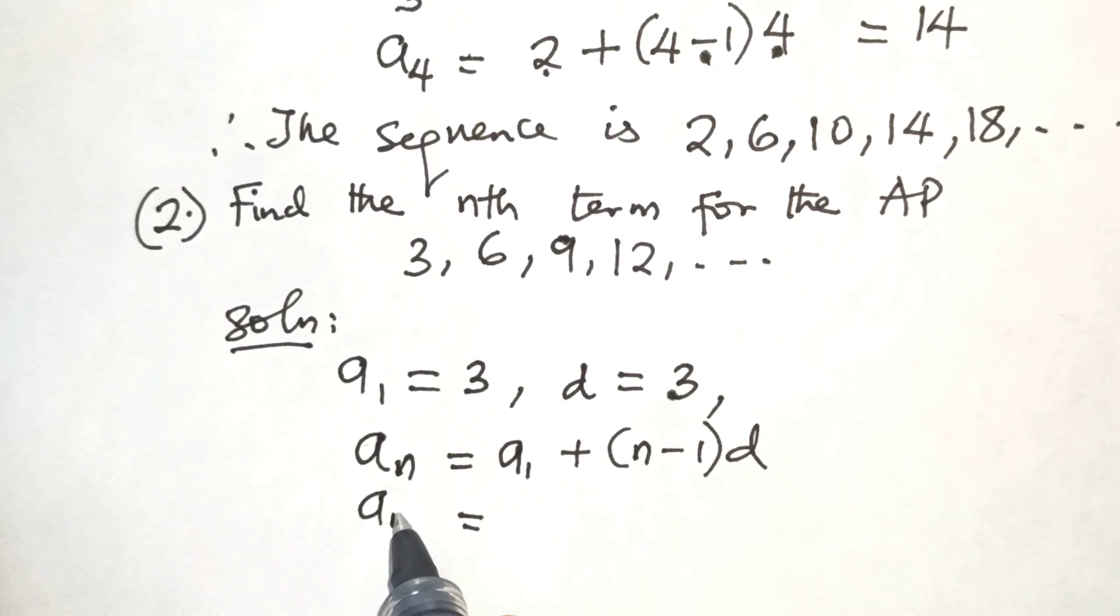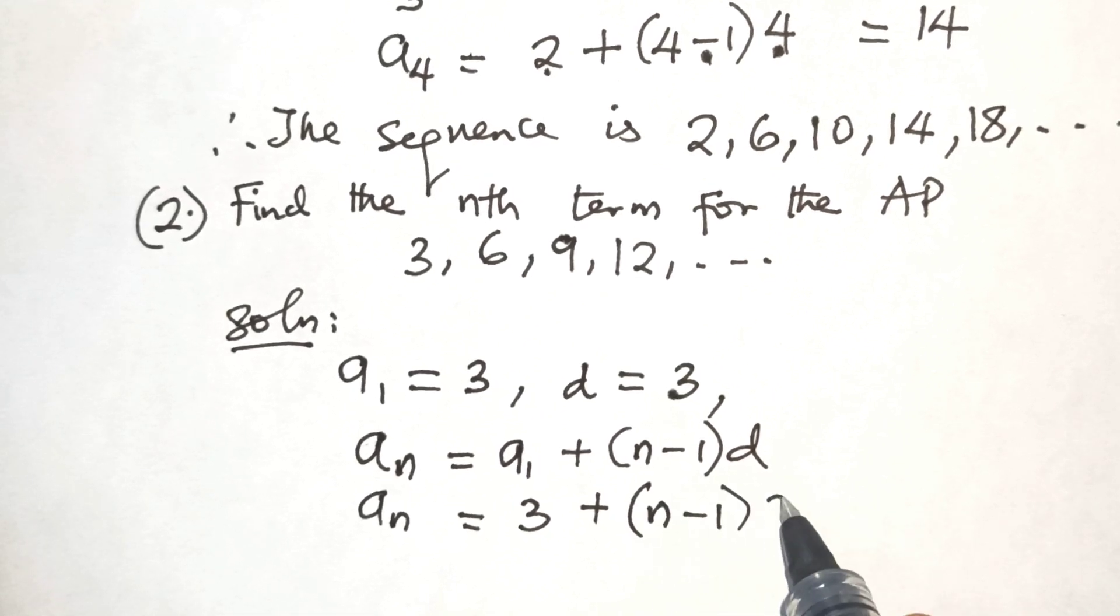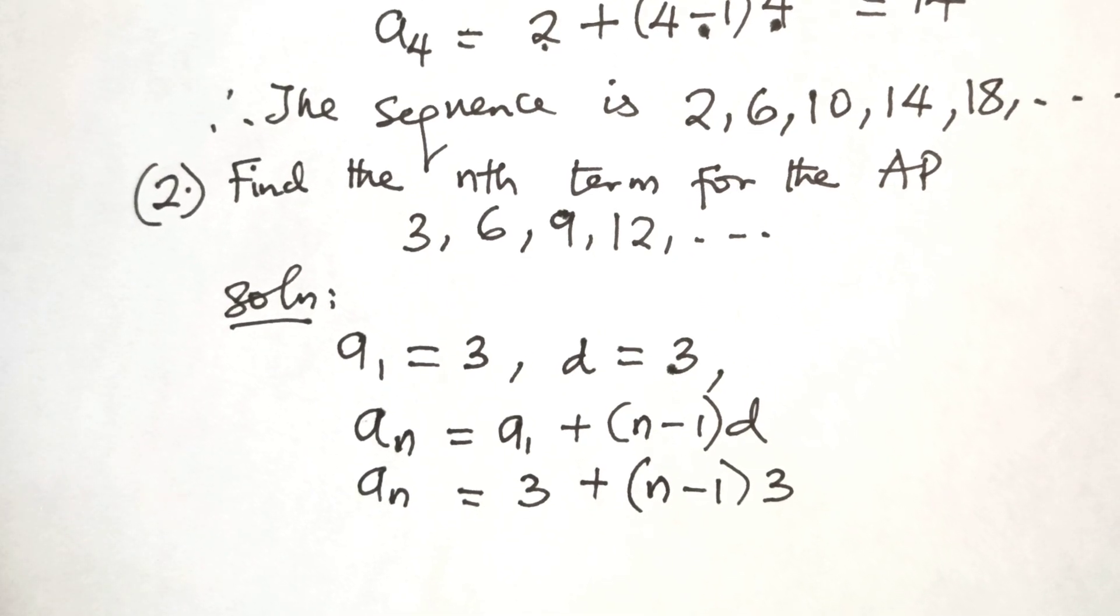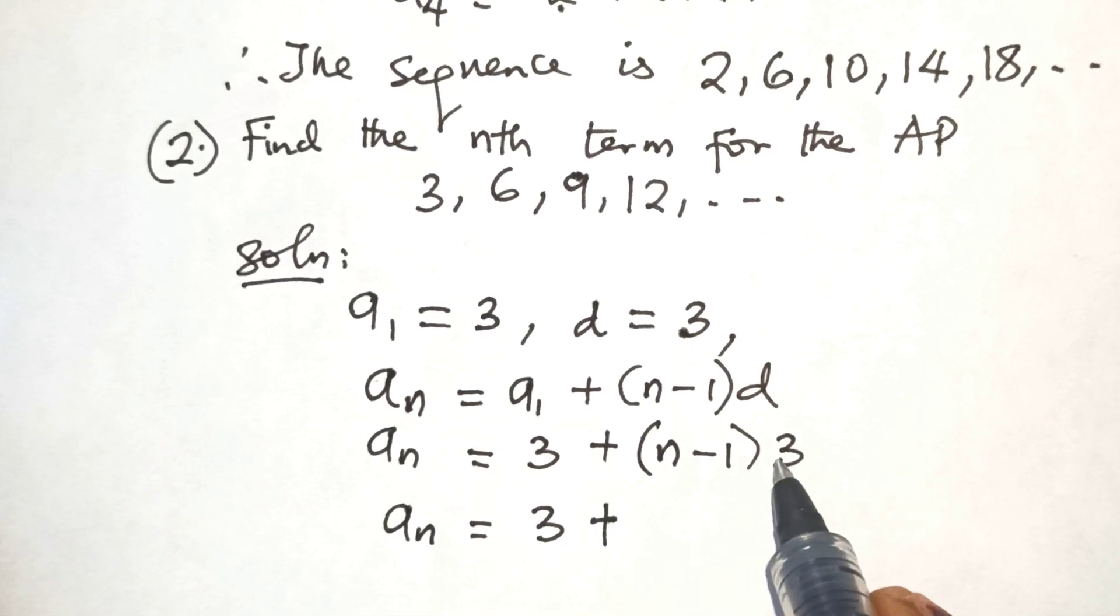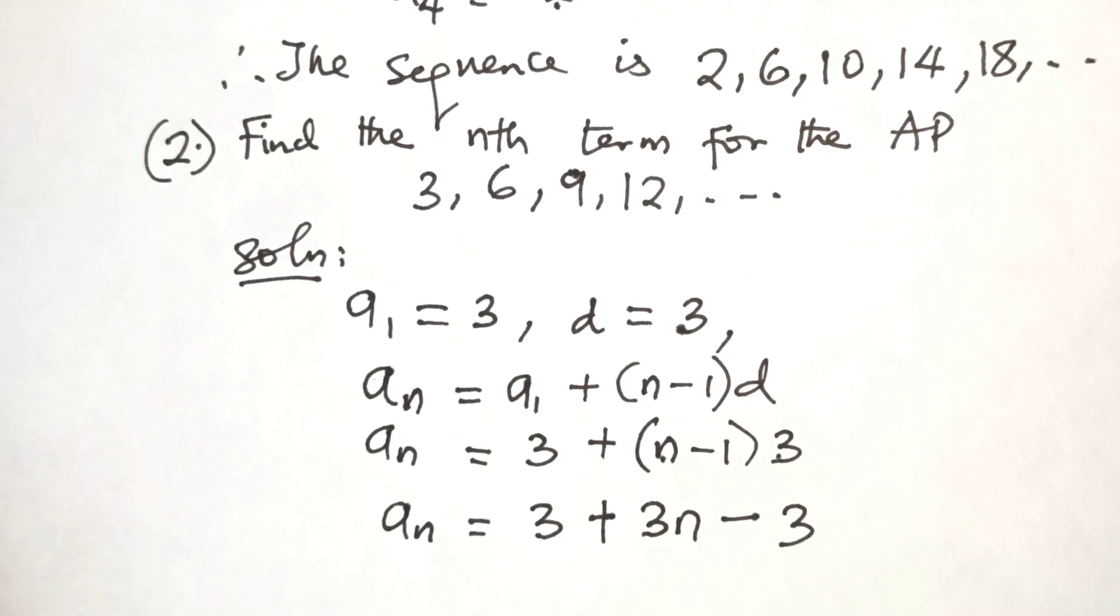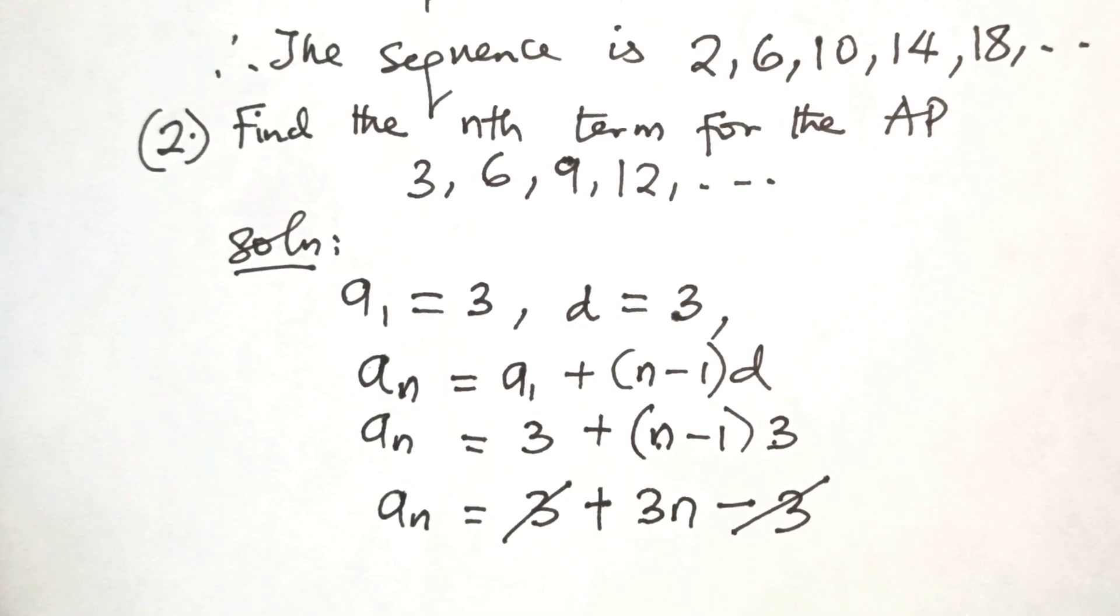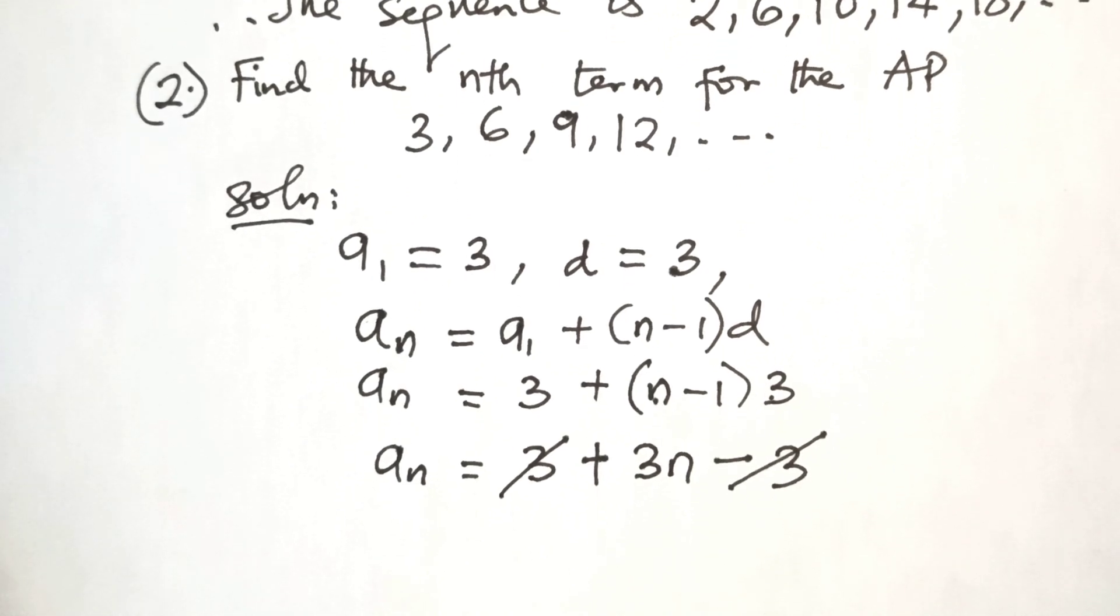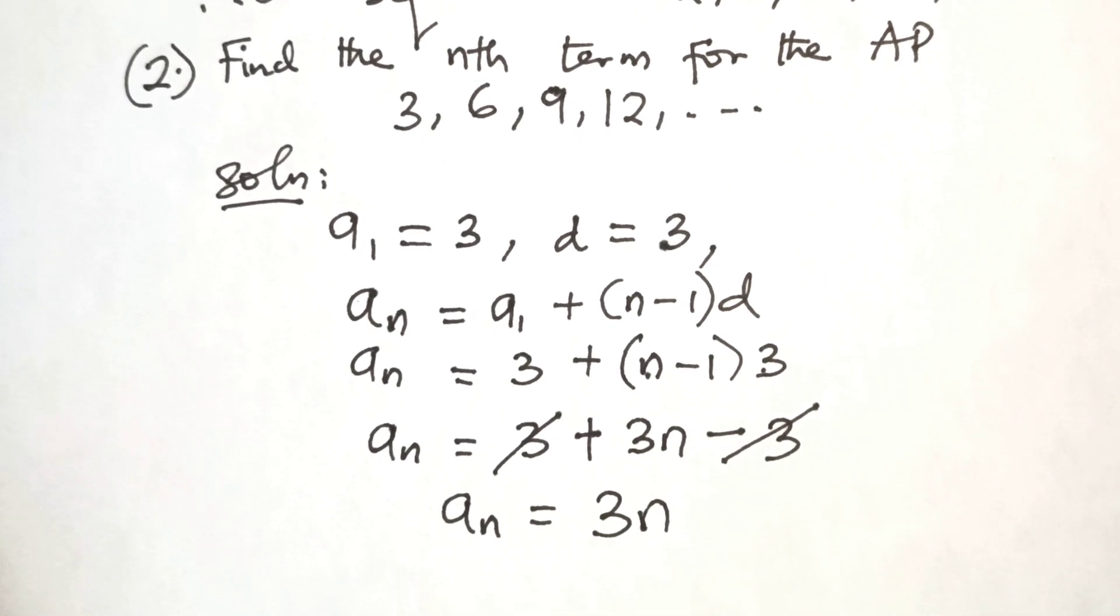This is equal to 3 plus N minus 1 times 3. We are going to open up the brackets. AN is equal to 3 plus 3 times N is 3N minus 3 times 1 is 3. Now we can see that 3 minus 3 will be 0, so we are left with AN equal to 3N. So that is the nth term for the given sequence.